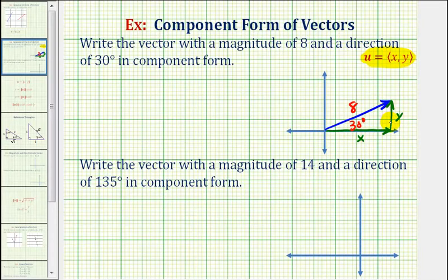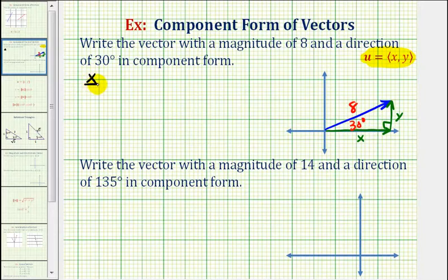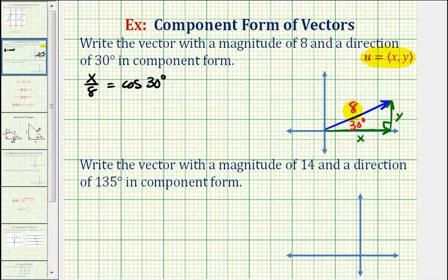Now because we have a right triangle, we can solve for x and y using trig equations. For example, cosine 30 degrees is equal to the ratio of the adjacent side to the hypotenuse. So we have cosine 30 degrees equals x divided by eight. And then the sine of 30 degrees would be equal to the ratio of the opposite side to the hypotenuse, so the sine of 30 degrees is equal to y divided by eight.